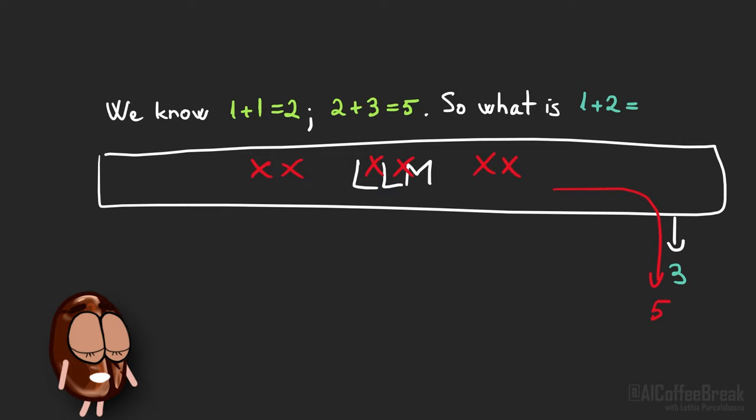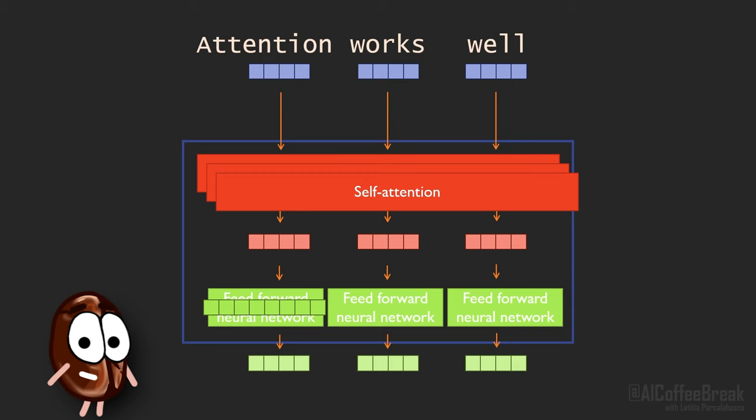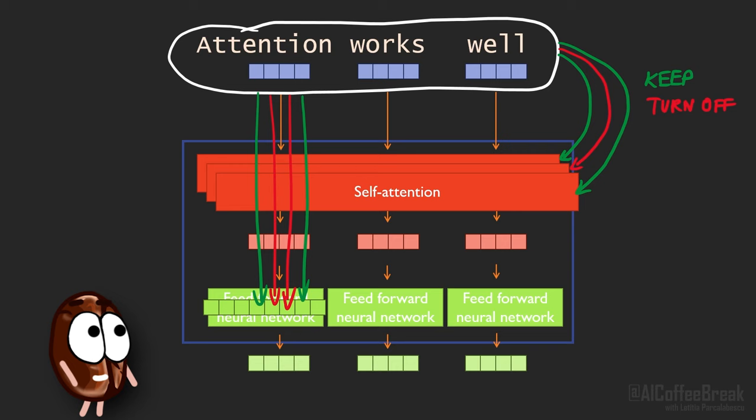Therefore, the idea of the Déjà Vu paper is to turn off neurons and attention heads depending on the input, which the authors call contextual sparsity. Contextual sparsity means that we dynamically decide which parts to be used on the specific current input, much like how your brain only activates certain parts when solving different types of problems.